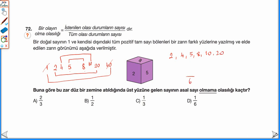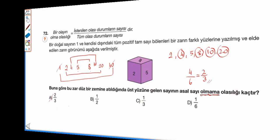Bizden asal sayı olmama olasılığını soruyor. Asal sayı olmayan: 4 var, 8 var, 10 var, 20 var — yani istenen olası durum sayısı 4 tane. 4 bölü 6, sadeleştirdiğimizde 2 bölü 3 olur. Yani cevap A.